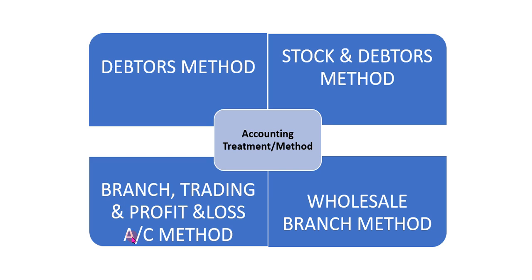Next, we will move to the accounting treatment or accounting methods of branch accounting. There are four methods: first, the debtors method; second, the stock and debtors method; third, branch trading and profit and loss method; and fourth, the wholesale branch method.